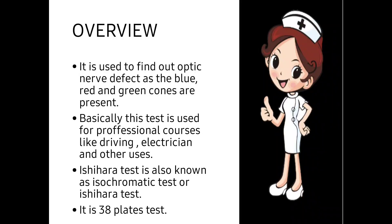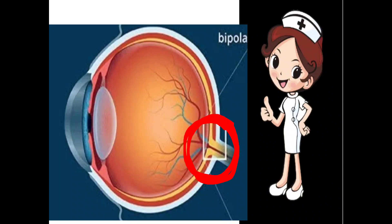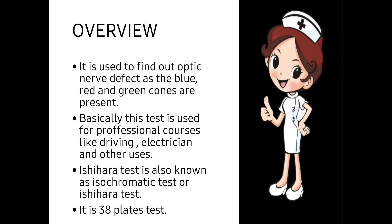The blue, green, and red cones are present on the optic nerve. The macula is present on the optic nerve, and at the peripheral region the red, green, and blue color cones are present. So to find out the optic nerve defect, we have to do the color vision test of the patient.